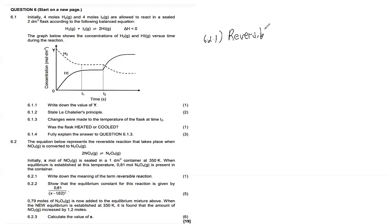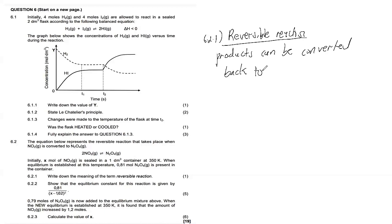Question 6.2.1 asks for the meaning of the term reversible reaction. A reversible reaction is a reaction where products can be converted back to reactants. That's how you define it: products can be converted back to reactants.